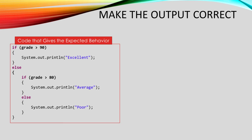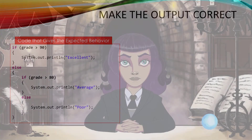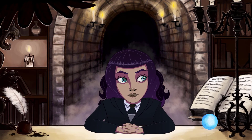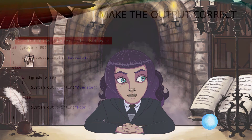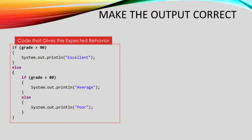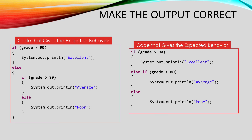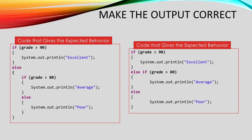Just for completeness, let's look at the code that gives the expected behavior. Test it with a few values of grade to make sure that you see why it works. This version is fully parenthesized and you can never go wrong that way. However, sometimes when you have a sequence of mutually exclusive options like this, we leave off the curly brackets on the else and put the next if on the same line as the else. Even though these are nested conditionals, some people think that it more clearly expresses the idea that there are three options being selected.